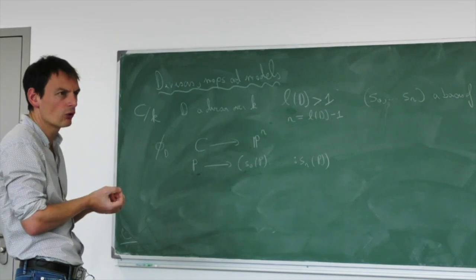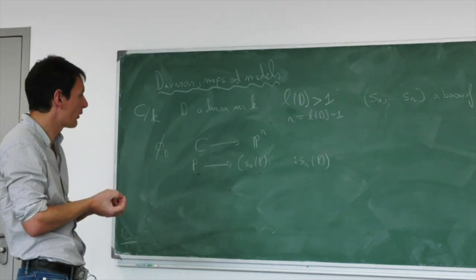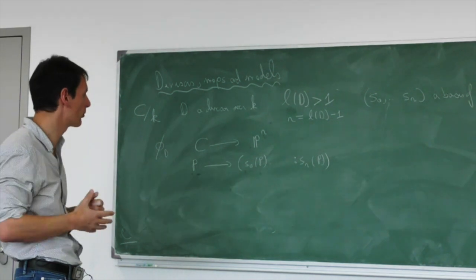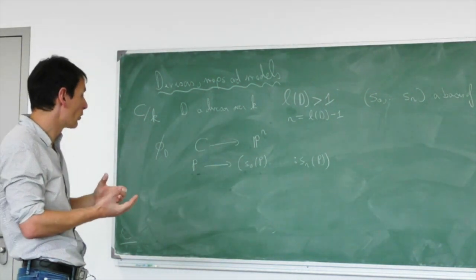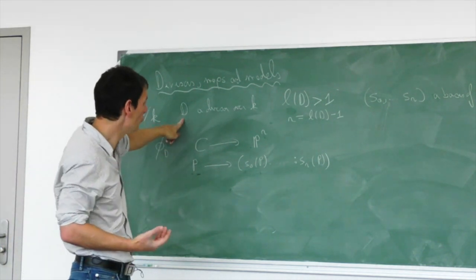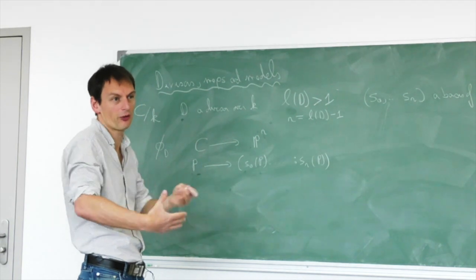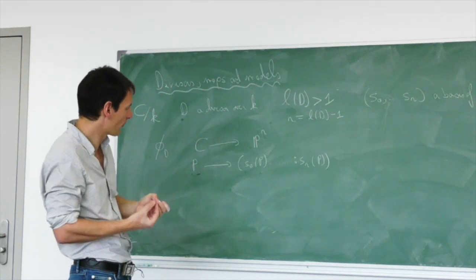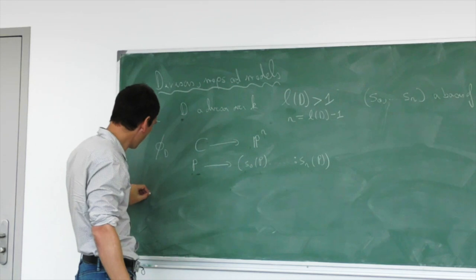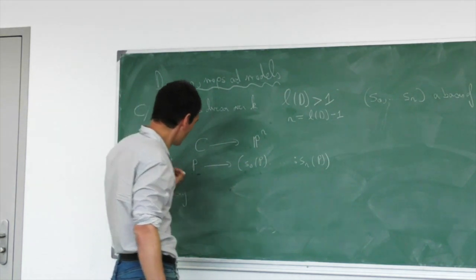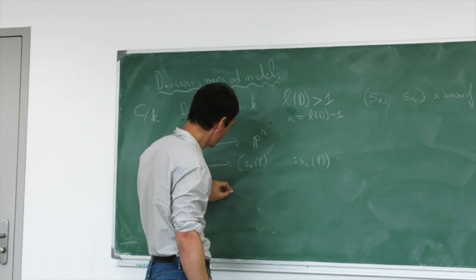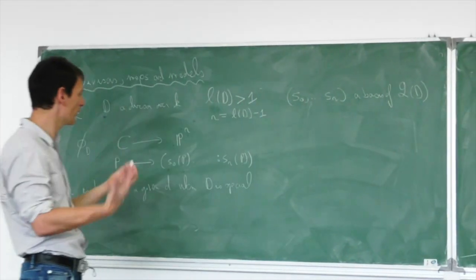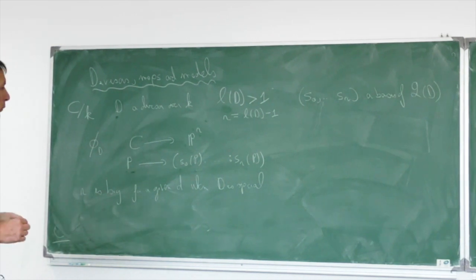We have already understood that it's better to have smaller degrees to understand our curves — this limits the number of parameters needed to represent your object. So we want small degree for D and big R. It's not possible to get the best of both worlds, but you get a better situation when D is a special divisor — R is big for a given D when D is special. That's why finding nice equations for the curve is often related to looking at special divisors.